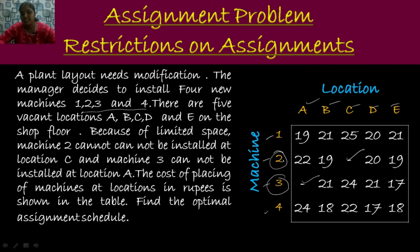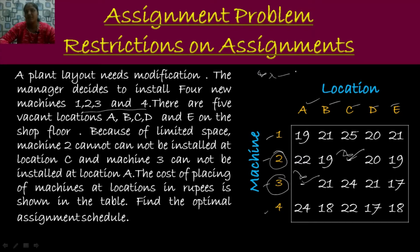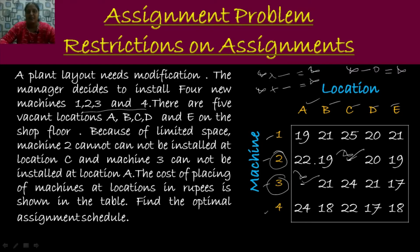Here we have two restrictions: machine 2 cannot be installed at location C, and machine 3 cannot be installed at location A. To handle these restrictions, we assign a very heavy cost — infinity — at these cells and proceed as usual. When you add or subtract any value with infinity, the value remains infinity itself, so these cells will be automatically avoided during the Hungarian algorithm.